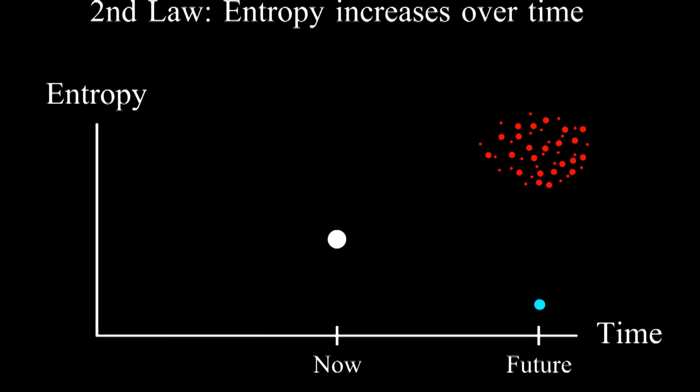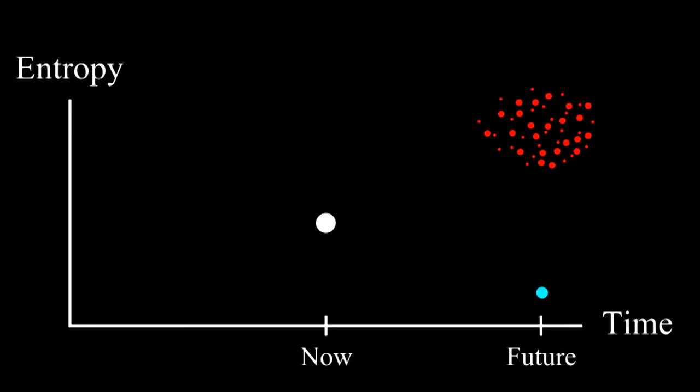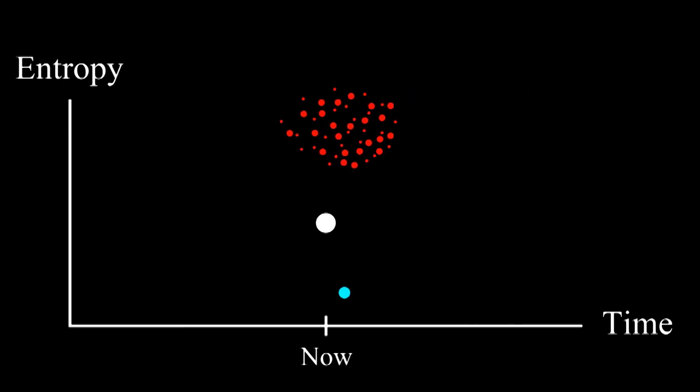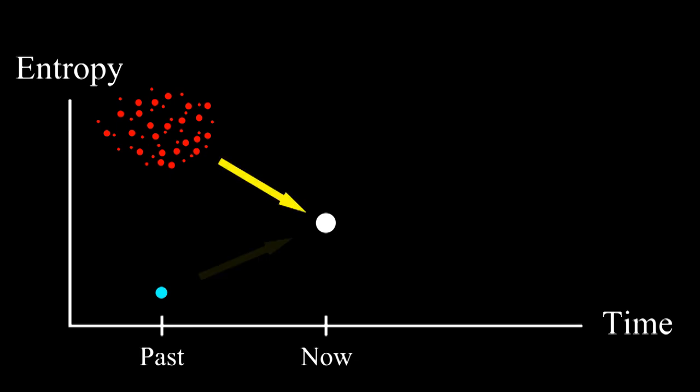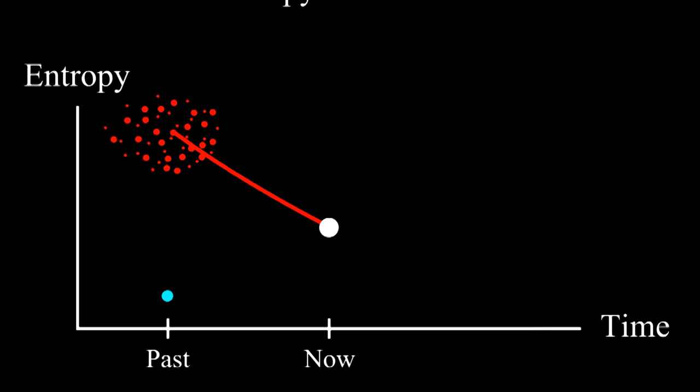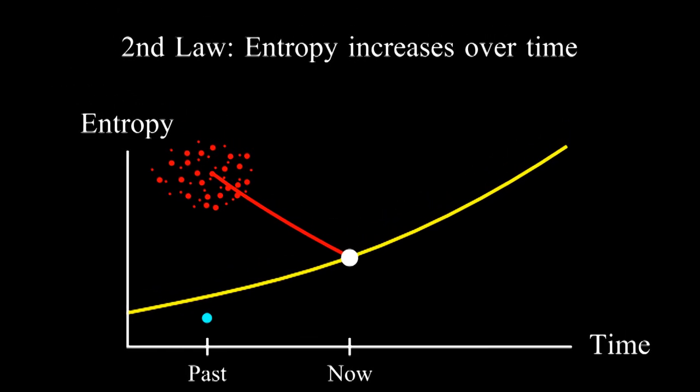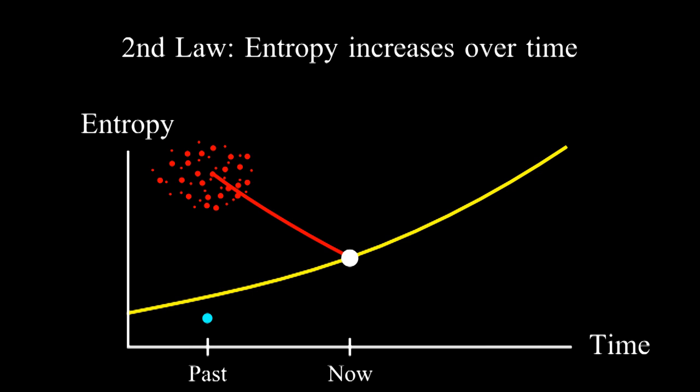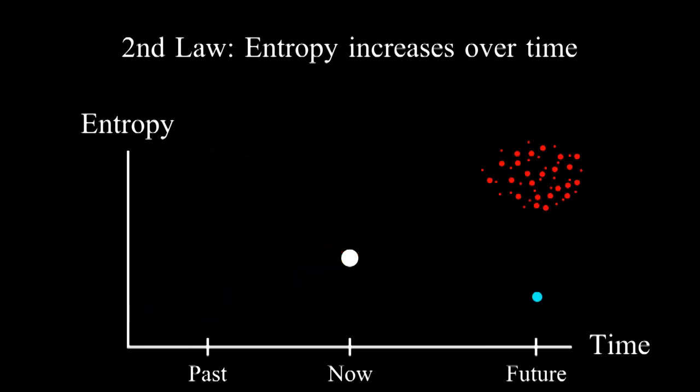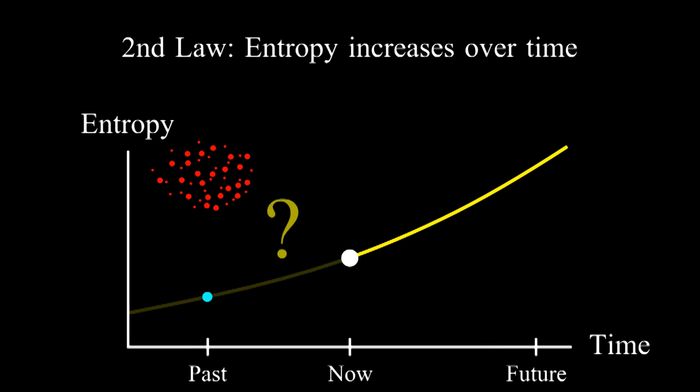Now, at first, you might think that this explains why entropy is increasing, but not so fast. Let's apply the same logic in a slightly different way. Suppose now that you are in a medium entropy state. What's the most likely thing to have happened in the past? Is it more likely that you came from a high entropy or from low entropy? Applying the same logic, there are so many more high entropy states that we expect you would have come from one of them. So we expect the opposite. We expect entropy to have decreased in this case, but that's not what happened.